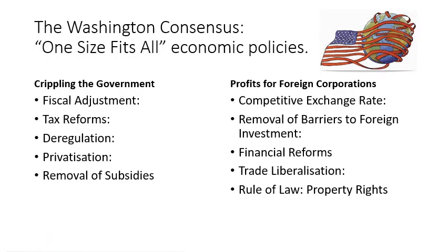A set of policies was created which was called the Washington Consensus. It was a one-size-fits-all policy that would be followed by all developing nations to grow. This is a bit strange because obviously the development strategy for Peru would be different from the one for Nigeria, and that would be different from the one for Pakistan.